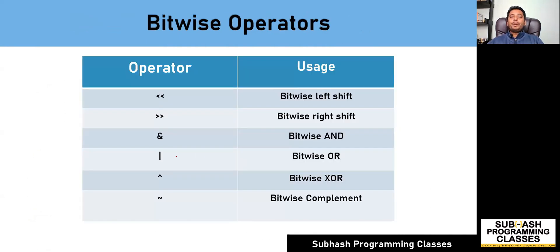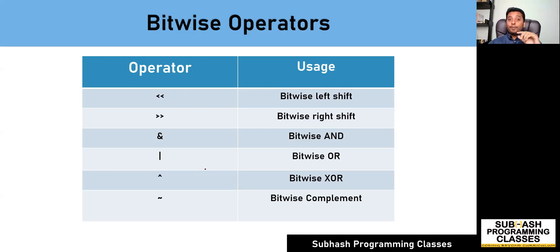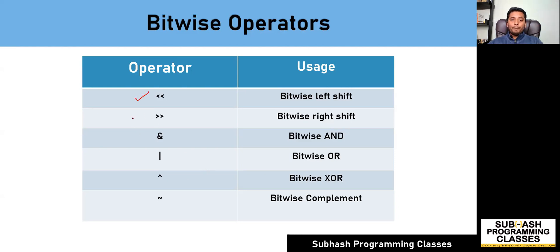So what do you mean by bitwise operators? Bitwise operators are those operators which operate on the binary form of a given number. It means whenever you are using a bitwise operator on a given number, you will have to first represent that number in binary format before applying the bitwise operation. In C language, there are six bitwise operators: bitwise left shift operator, bitwise right shift operator, bitwise AND operator, bitwise OR operator, bitwise XOR operator, and bitwise complement operator. Let's discuss each of these operators one by one.